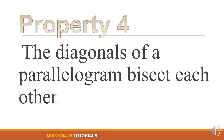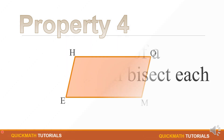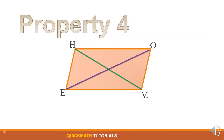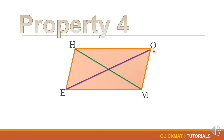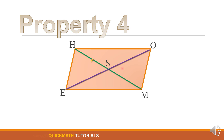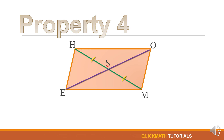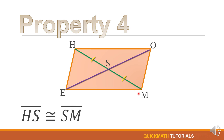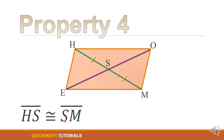For our fourth property: the diagonals of a parallelogram bisect each other. In the figure, we have diagonal HM and diagonal EO bisecting each other at point S. When we say bisect, it means they cut each other into two equal parts. So we have: line segment HS is congruent to line segment SM.